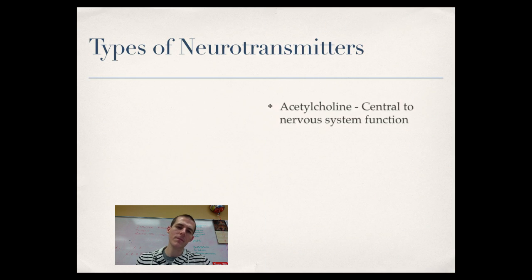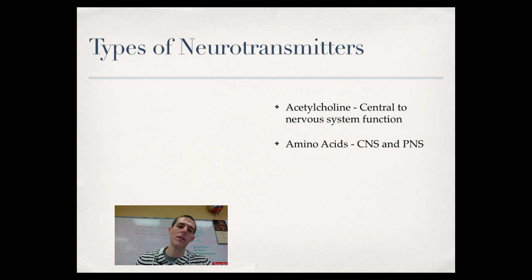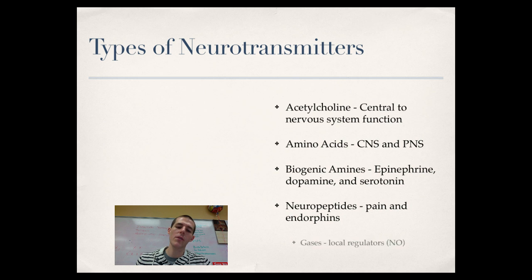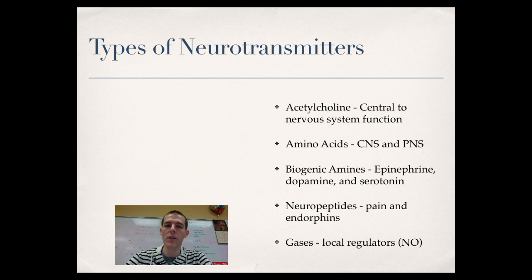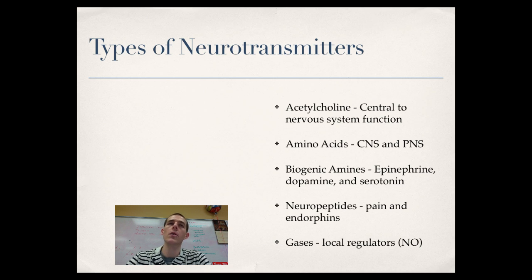Neurotransmitters can be broken down into five different categories. You probably won't have to memorize all of these, but there are five major classes of neurotransmitters, and hundreds of individual neurotransmitters can all be grouped according to this scheme. One group is acetylcholines, which are central to nervous system function — active in learning, memory, muscle stimulation, and all kinds of stuff. So they're a big deal. That's one class.